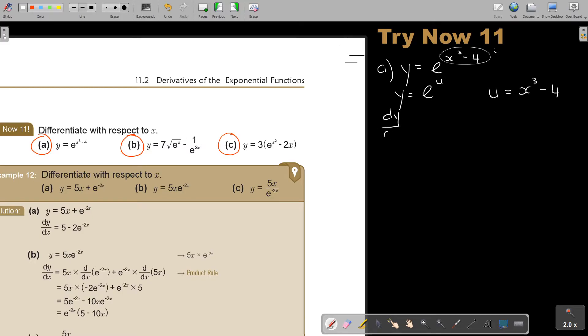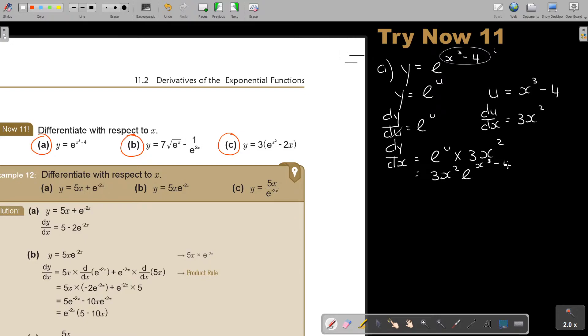So dy by du, it stays e^u and du by dx is going to become 3x squared and if I multiply then this will cancel out. So dy by dx equals e^u multiply 3x squared. So it's just going to be 3x squared e and substitute u. It was x to the power of 3 minus 4 and that will be my final answer.